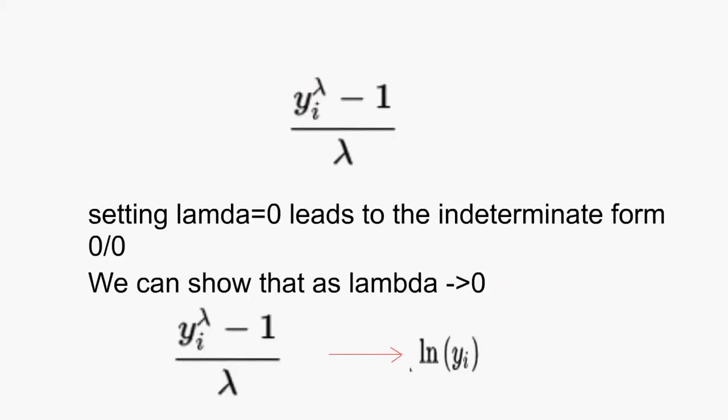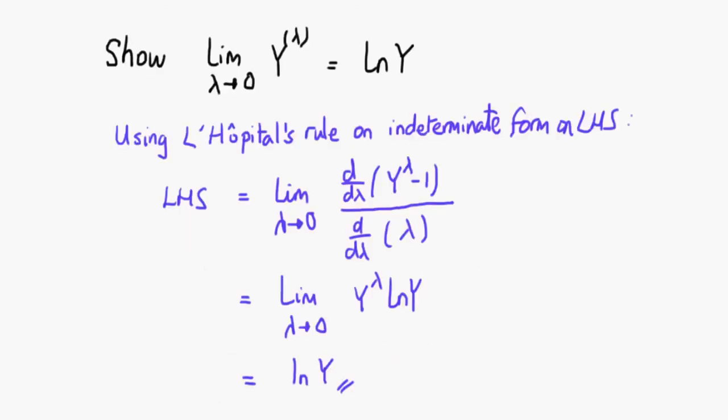If we set lambda to zero in the BC transform we get zero divided by zero which is what we call an indeterminate expression. Using L'Hopital's rule can show that this expression goes to log Y.